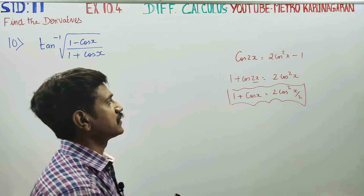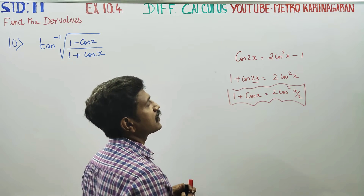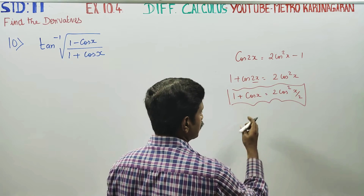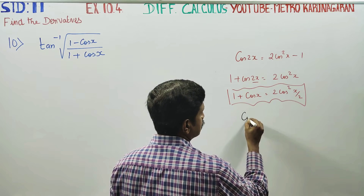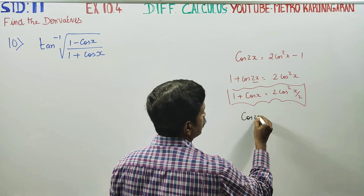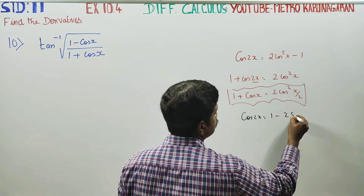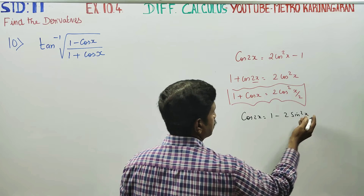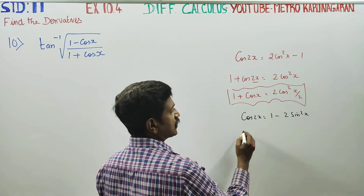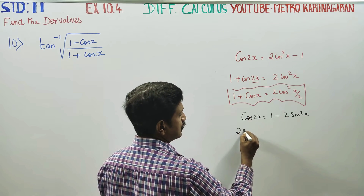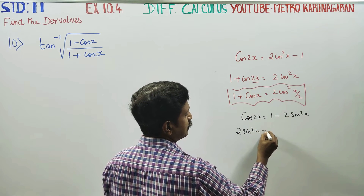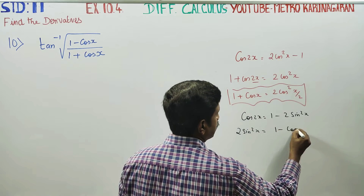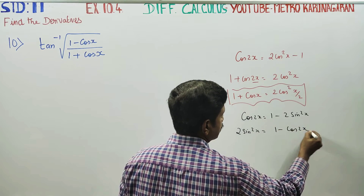Similarly, cos 2x is equal to 1 minus 2 sin squared x. So 2 sin squared x equals 1 minus cos 2x. This gives us the formula for 1 minus cos 2x using the double angle formula.